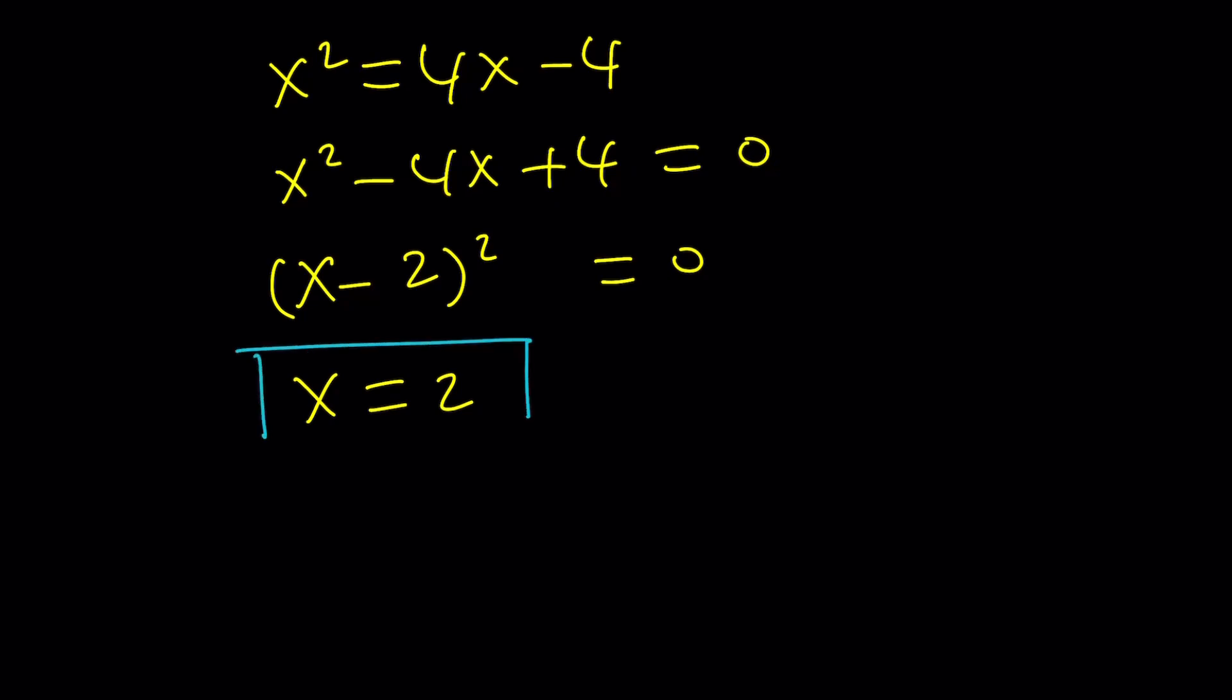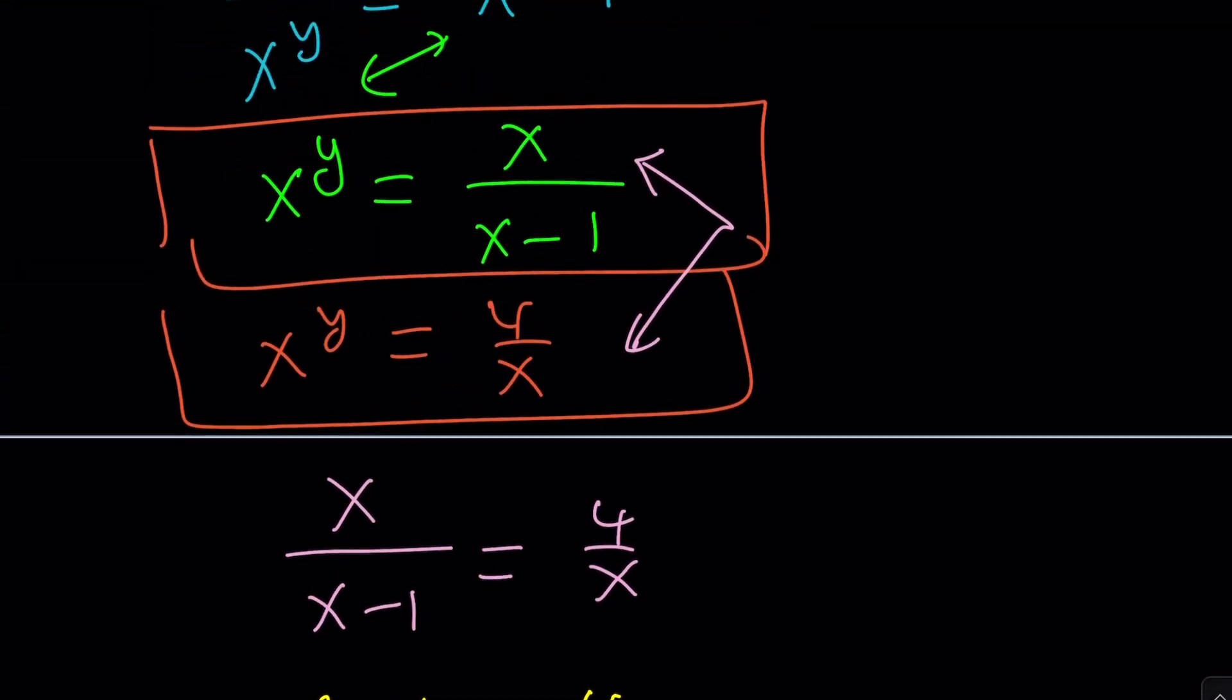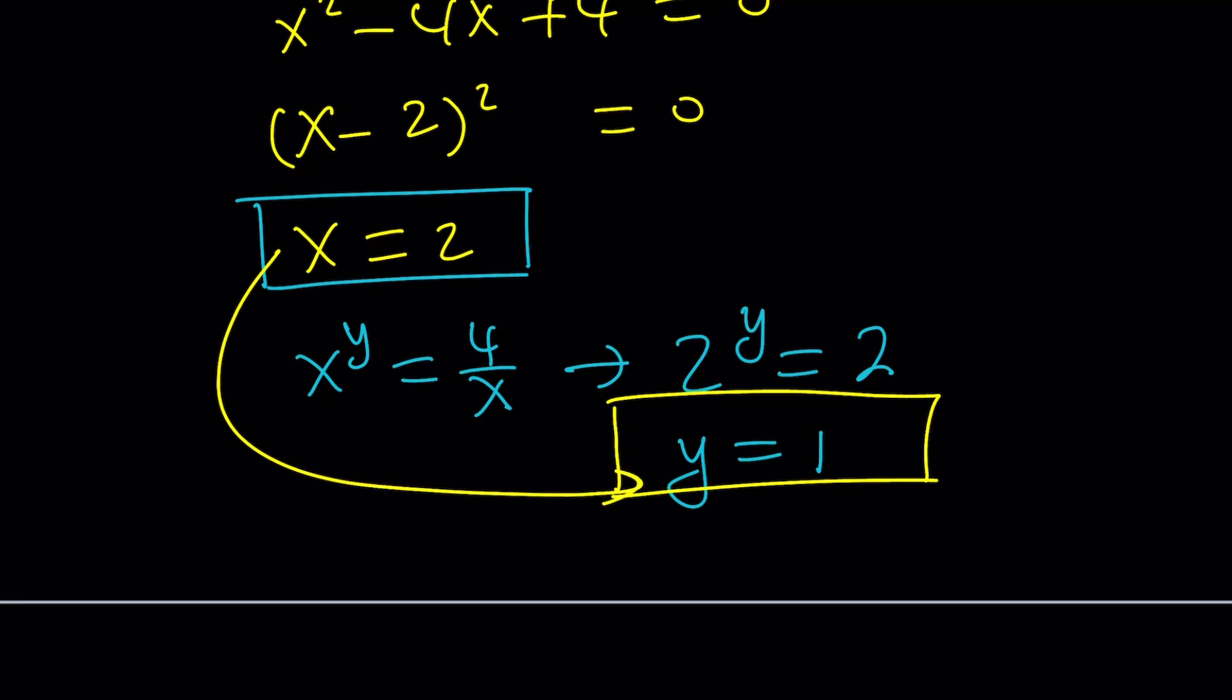From here, we get a single solution, which is x equals 2. So we've got one value for x. Do you think we're going to get a single value for y as well? Let's take a look at our formula. Doesn't matter which one you use. I'll use the second one: x to the y equals 4 over x. Now replace x with 2. This gives you 2 to the power y equals 4 divided by 2, which is 2. From here, y equals 1 should be a solution that corresponds to x equals 2. So it looks like 2, 1 is going to satisfy this system.